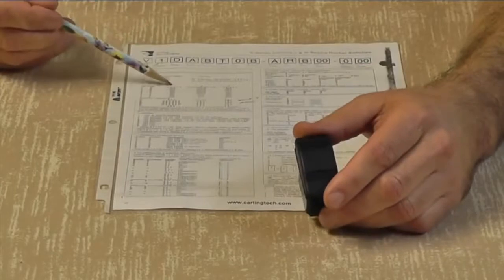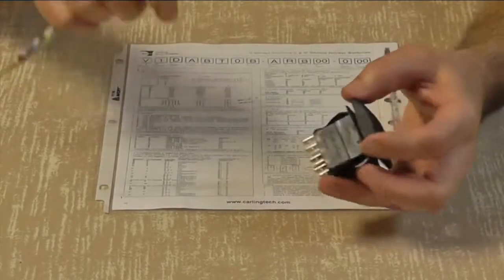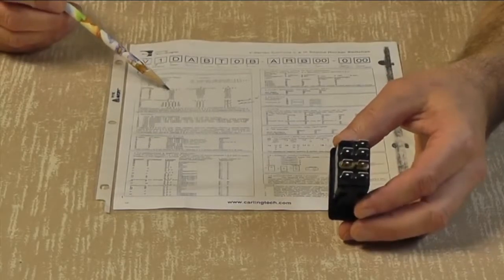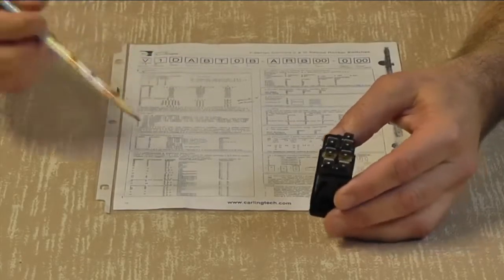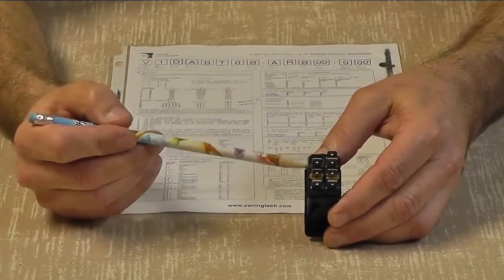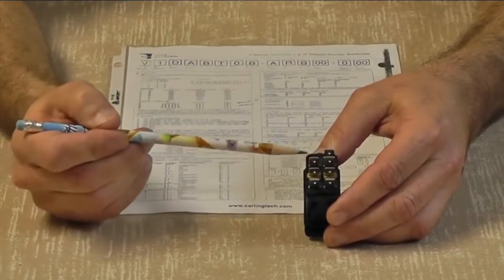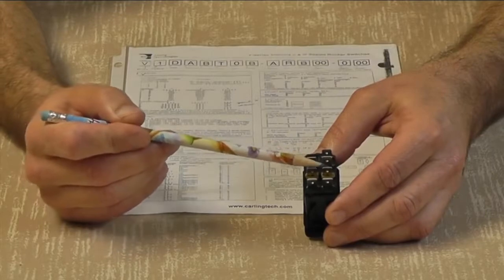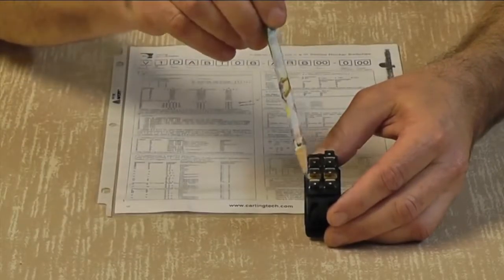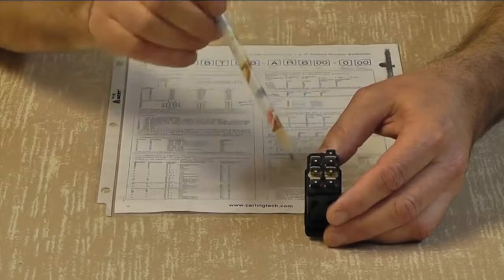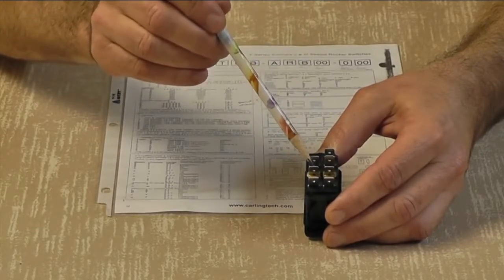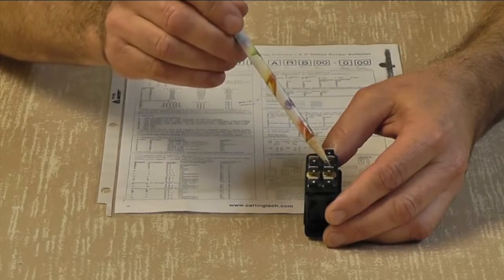So you read down column one, in position number one, which is on, it says terminals number two and three and five and six are connected. So remember, one, two, three, four, five, six. So, two and three, five and six are connected. Remember, these two sides are independent of each other. The only thing we have here is we have a jumper that's going from position number two to position number four.